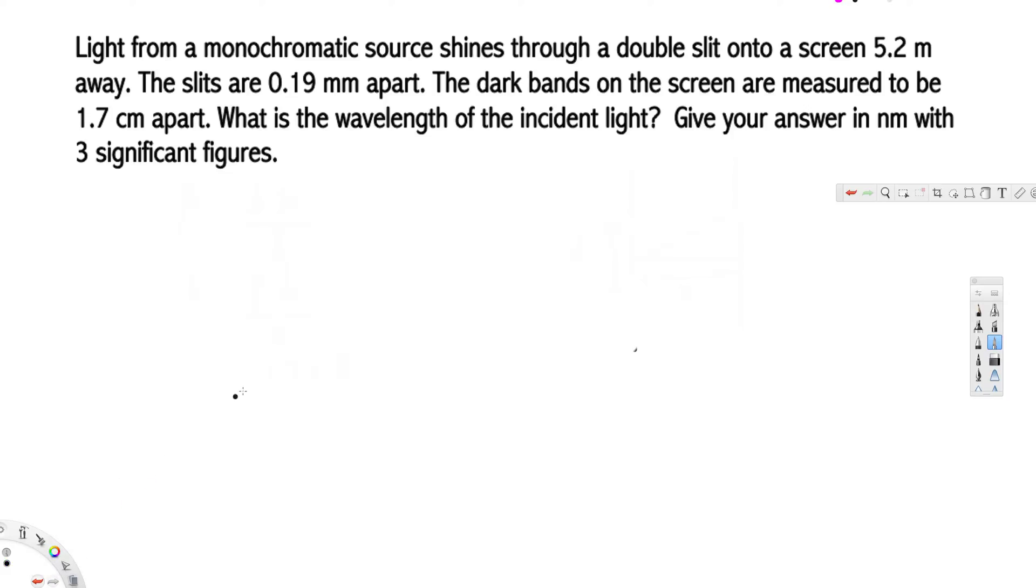Let's look at this problem. The question is asking: light from a monochromatic source shines through a double slit onto a screen 5.2 meters away. The slits are 0.19 millimeters apart. The dark bands on the screen are measured to be 1.7 centimeters apart. What is the wavelength of the incident light? The question is asking us to find out the wavelength.